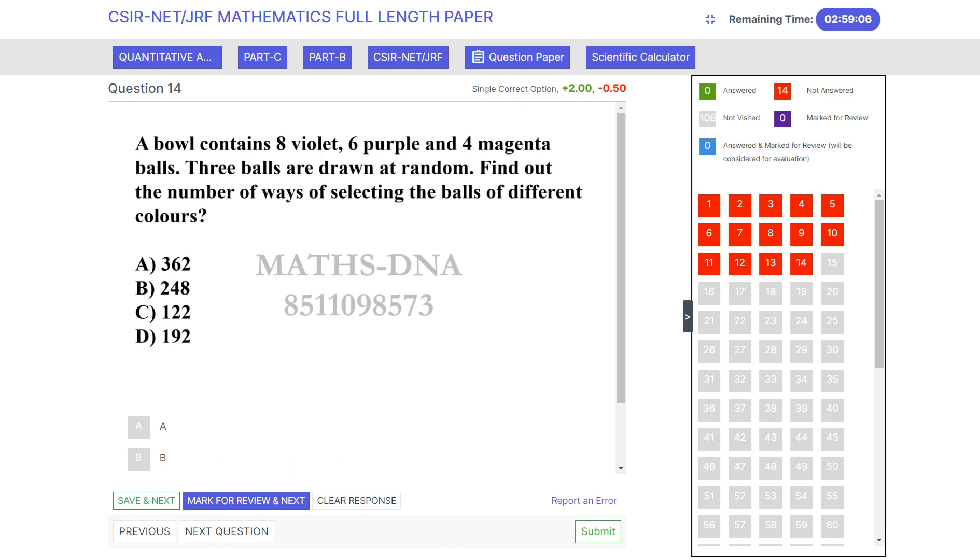The question is: a bowl contains 8 violet, 6 purple, and 4 magenta balls. Three balls are drawn at random. Find out the number of ways of selecting the balls of different colors.